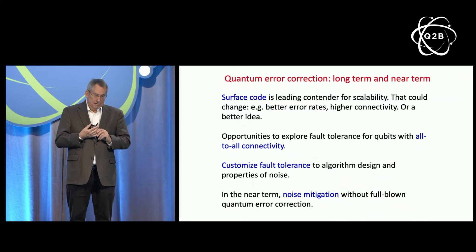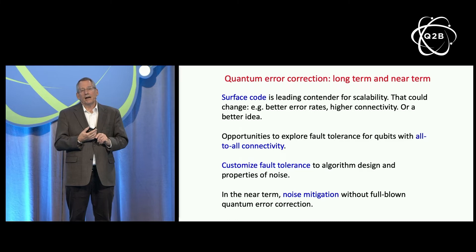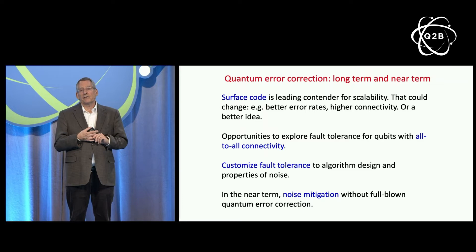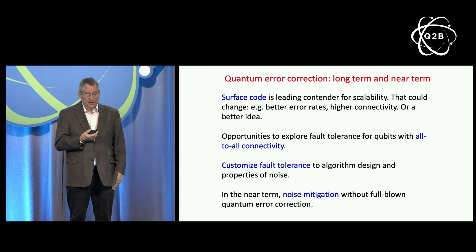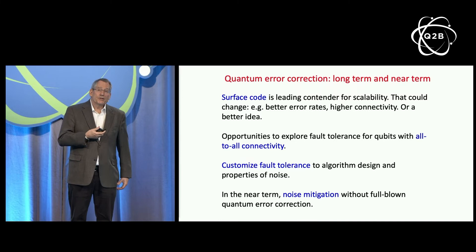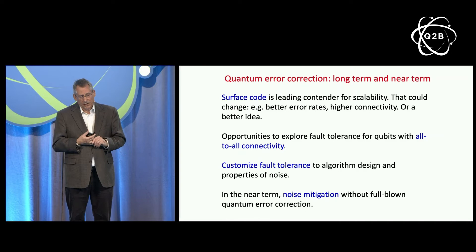For now, the best idea we have for achieving scalability with quantum error correction is based on the surface code. It has the advantage of tolerating a relatively high error rate and requiring only geometrically local processing in a two-dimensional array. There may be better methods, particularly as gate error rates continue to improve or as devices have higher connectivity beyond geometrically local gates. There's a real theoretical opportunity for finding better fault-tolerance methods with higher-connectivity many-qubit devices. In the near term, we'll also have opportunities to customize fault tolerance to the noise properties of a particular platform, and to find other ways of mitigating noise when full quantum error correction isn't yet feasible.